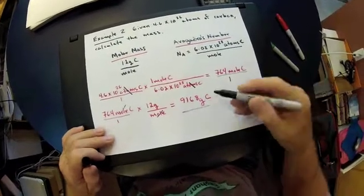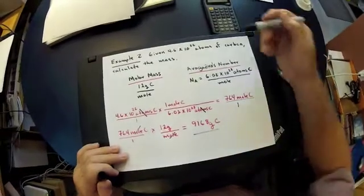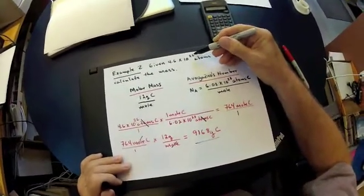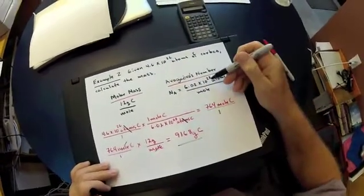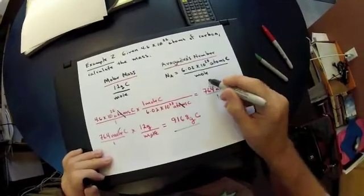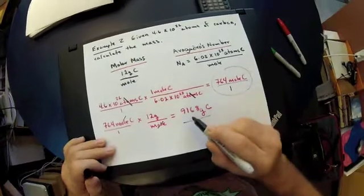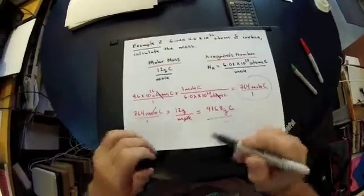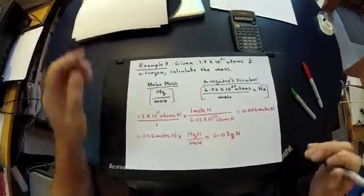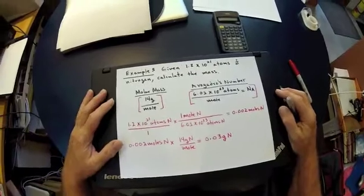This is a very large mass of carbon, but it should be — going back to the number of atoms given, 4.6 times 10 to the 26th, that is much larger than 10 to the 23rd. We got out a significant number of moles, so we knew to expect a large mass of carbon.